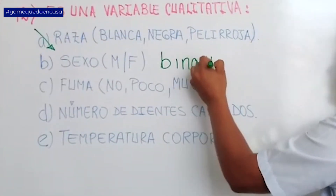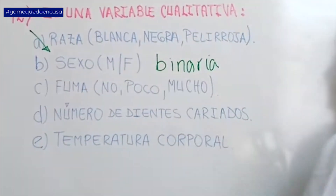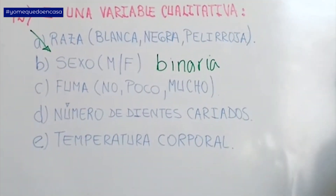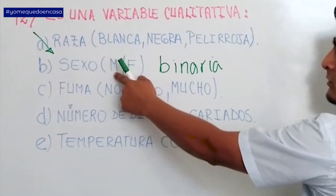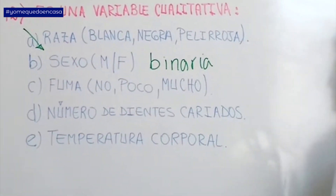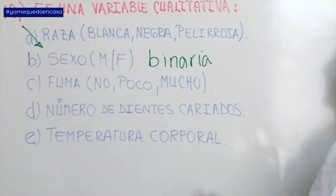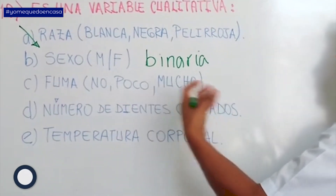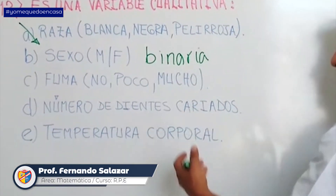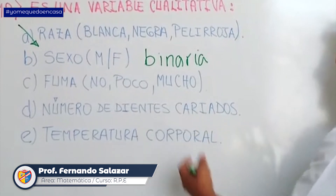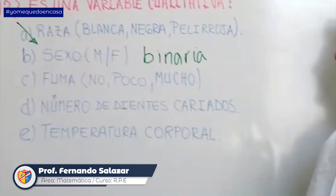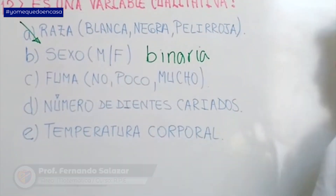¿Por qué, profesor? Porque solo me permite tomar dos opciones, como por ejemplo masculino o femenino, sí o no, verdadero o falso. Entonces, cuando yo me encuentre con ese tipo de variables, la voy a clasificar como una variable binaria.